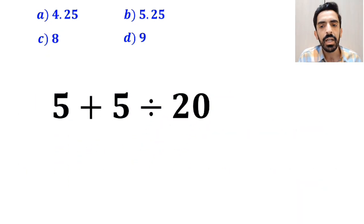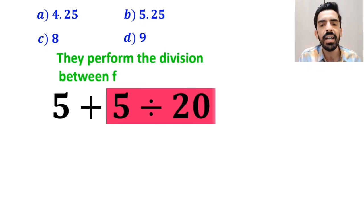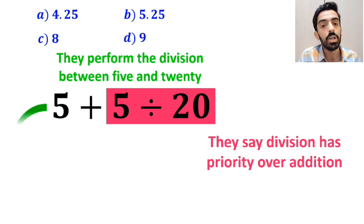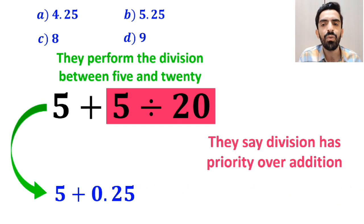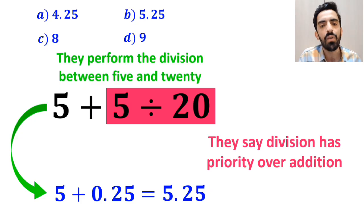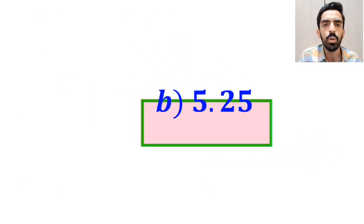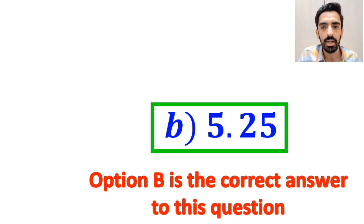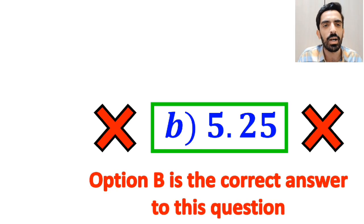In the next step, they perform the division between 5 and 20, because they say division has priority over addition. So they simplify this expression to 5 plus 0.25, which ultimately equals 5.25, and immediately they conclude that option B is the correct answer to this question. However, it's not the correct answer to this question.